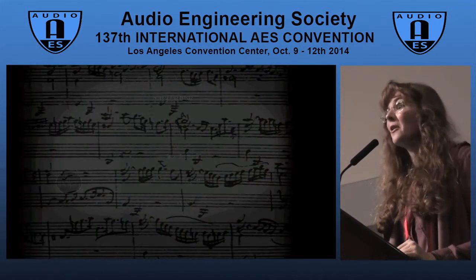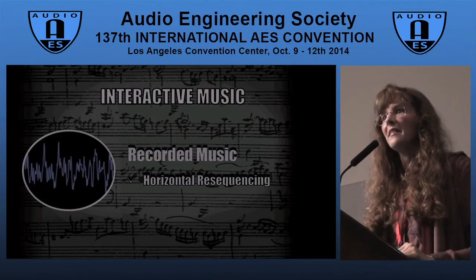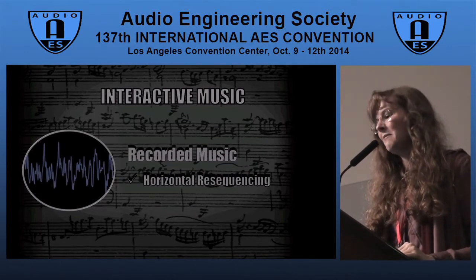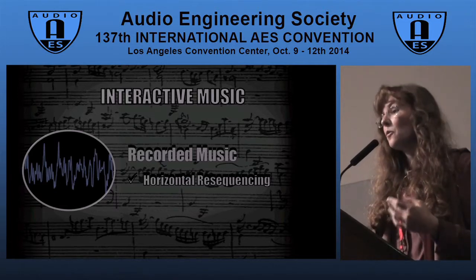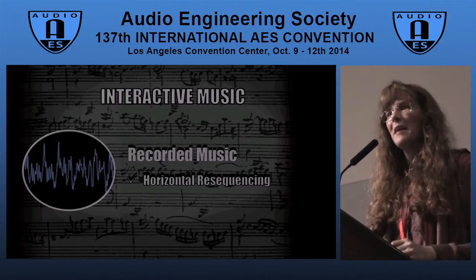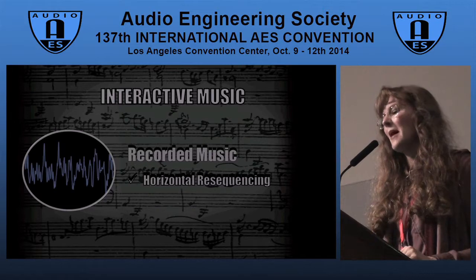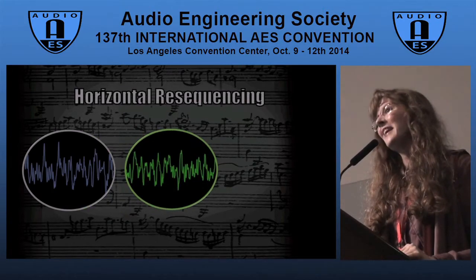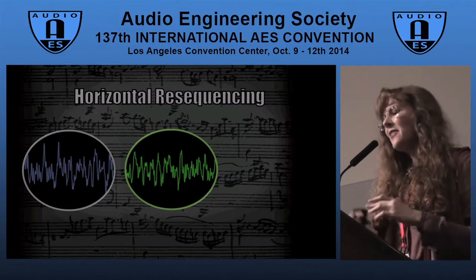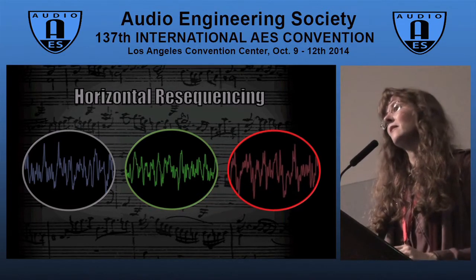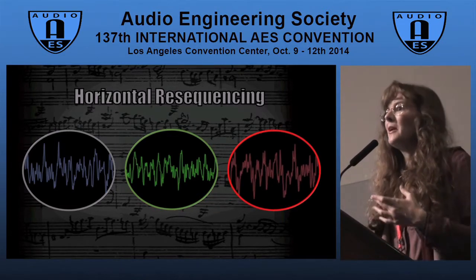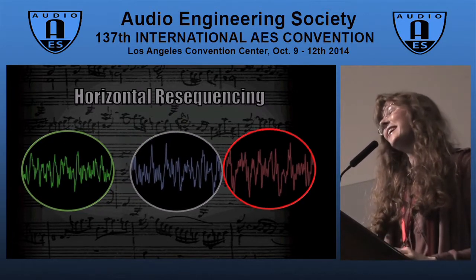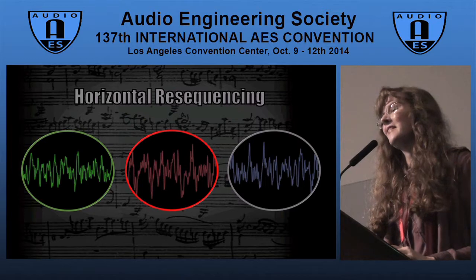That brings us to our first model of musical interactivity that we're going to discuss. It's called horizontal re-sequencing. In a lot of ways, horizontal re-sequencing is very similar to that musical dice game. The music is recorded in an audio file format and then constructed in segments or chunks so that it can be arranged and rearranged into different orders — essentially, re-sequenced.